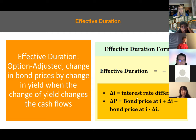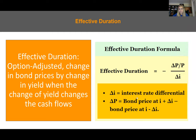The third type of duration is effective duration — this is option-adjusted. Because a lot of bonds are callable, effective duration accounts for embedded options that can change the bond's cash flow profile, making it the most accurate measure of interest rate sensitivity for bonds with optionality.